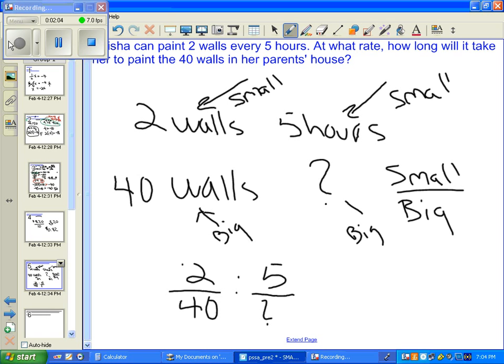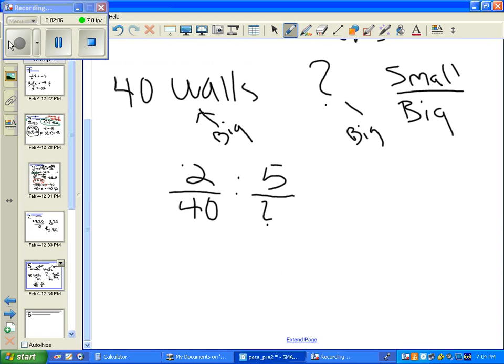So we cross multiply here. What I mean by that is we'll take two over 40, and we'll take five, and we'll make this question mark equal to x, just for convenience, and we'll say five times 40.